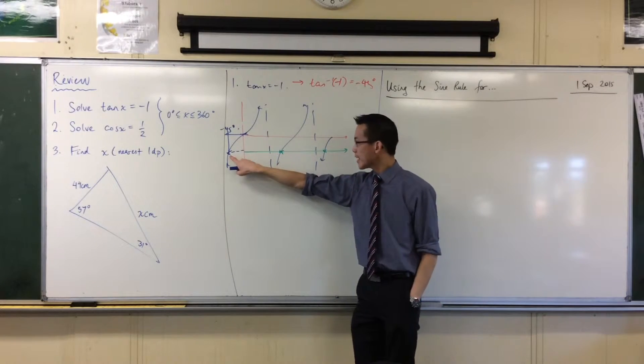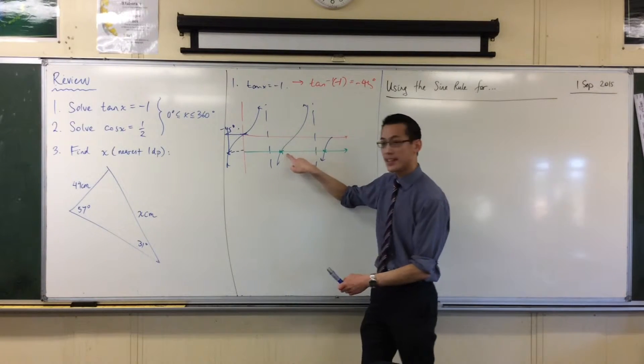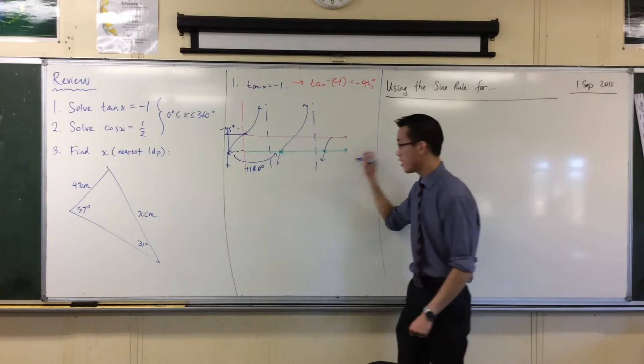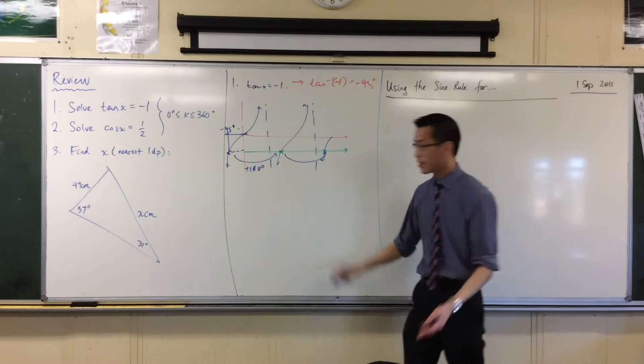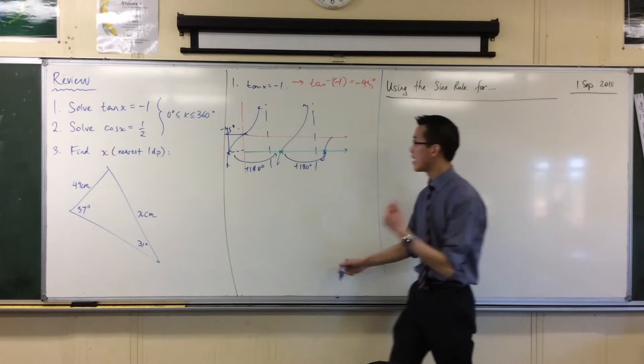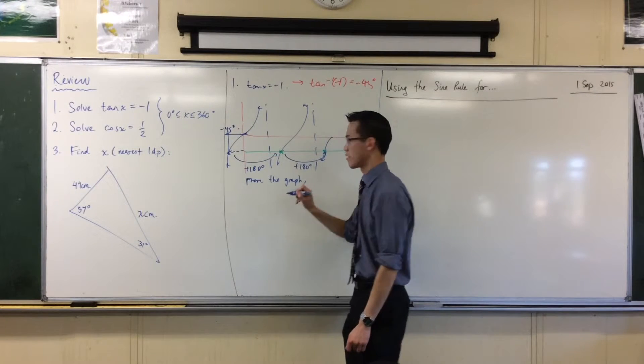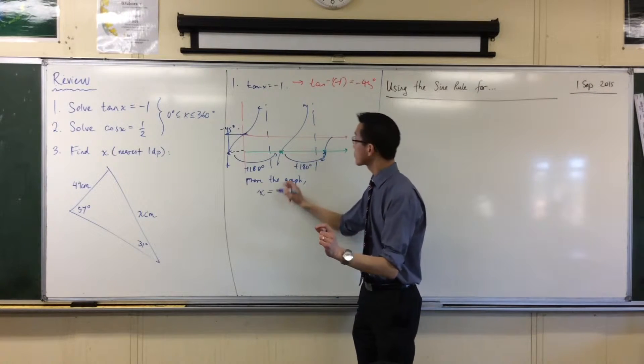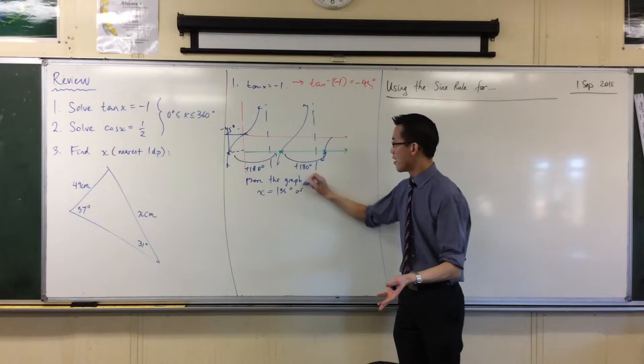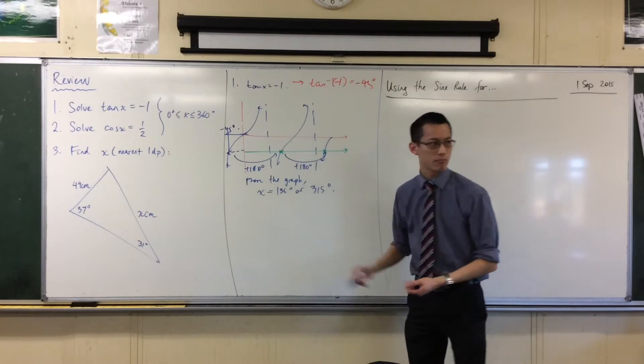So if that's an answer, and I know that tan repeats every how often? How many degrees? 180 degrees, right? To get to this answer, I'm just going to have to add 180. And to get to the third or the second answer, I'm going to add 180 again. So all I need to say, using the calculator and using my graph, is I can say from the graph, I'm going to have my two answers, which are negative 45 plus 180? 135. Or plus 180 again, which is 315, I think.